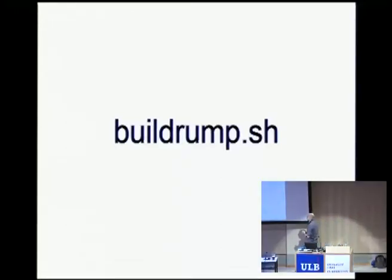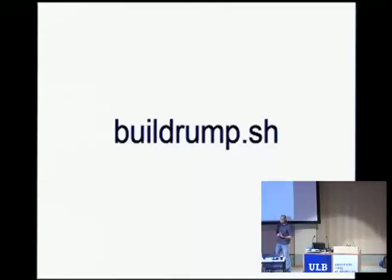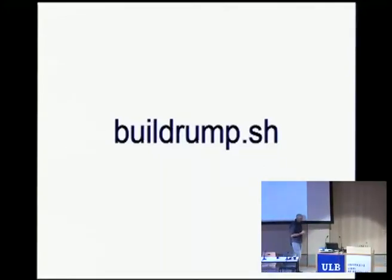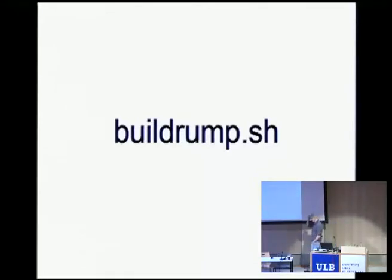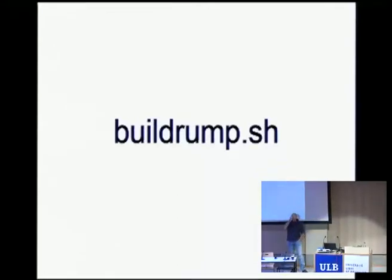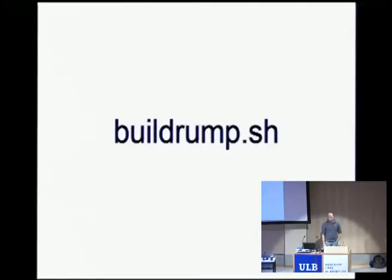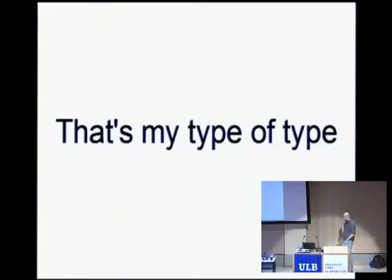I promised to tell you how you can run this on a sensible open source operating system — just in user space, no virtual machines needed. You get a script called buildrump.sh hosted on GitHub, get the NetBSD source tree, run the script, and some minutes later you'll be rewarded with a lot of libraries. I'll give you the URL at the end of the talk, though I'm fairly certain you're imaginative enough to find it yourself.